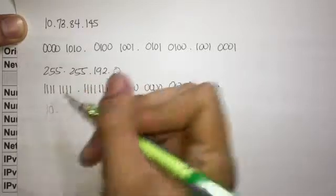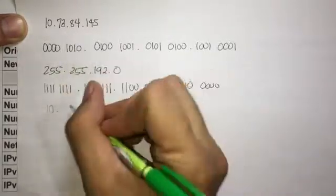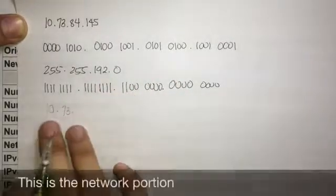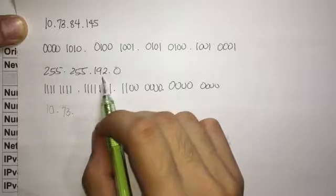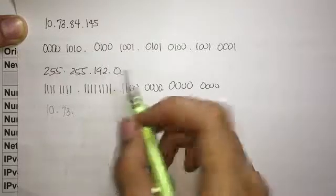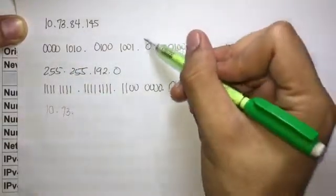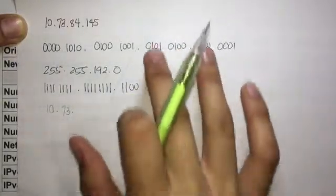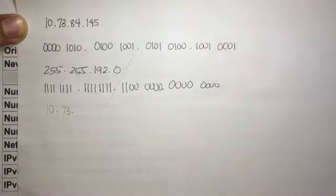Where the subnet mask has 255, we copy the IP address octet directly. So 255 maps to 10, giving us 10; 255 maps to 173, giving us 173 — these are the first two portions of the network address. For the third octet, we have 192 in the subnet mask and 84 in the IP address, and for the fourth we have 0 and 145 — these last two octets require the binary AND method.